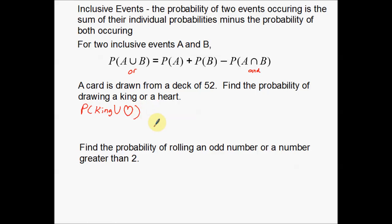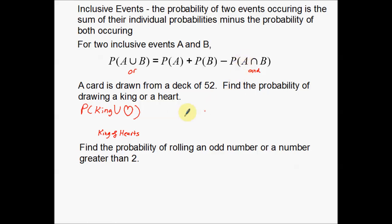What makes this an inclusive event? Inclusive means there's a little bit of overlap between these two categories — kings and hearts. There is one card that overlaps between these two categories: that is the king of hearts. The king of hearts is a king and it is a heart. That creates a little bit of overlap between the two probabilities. Looking back at the notation, I need to separate them out and then subtract the probability of both events happening — which happens when I draw the king of hearts.